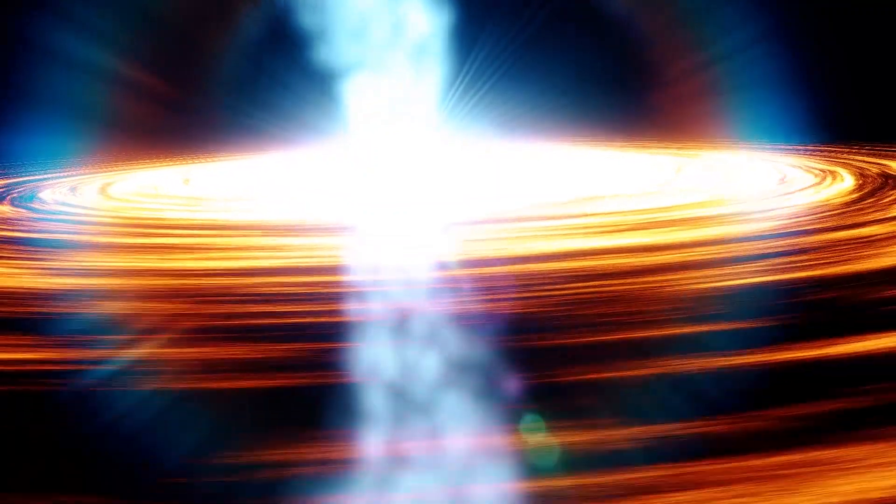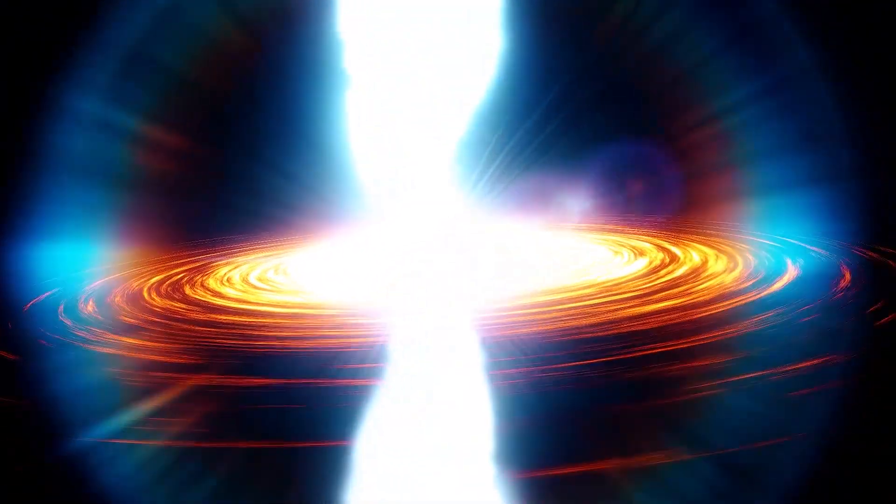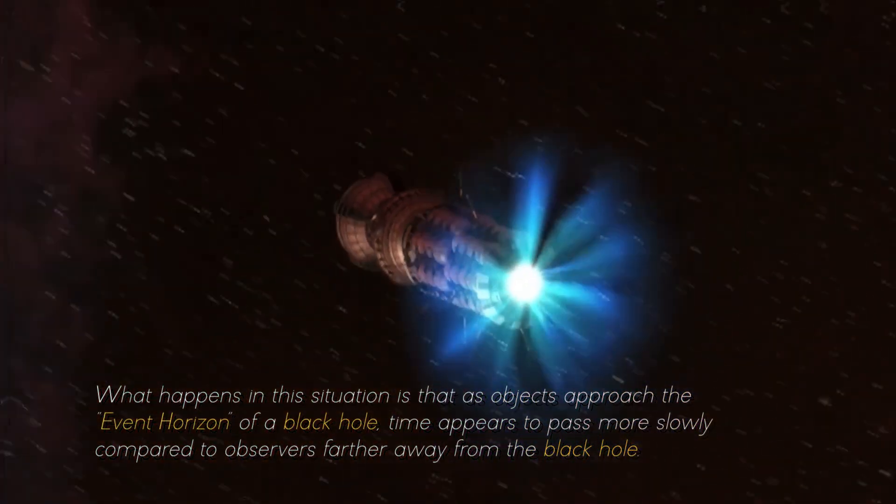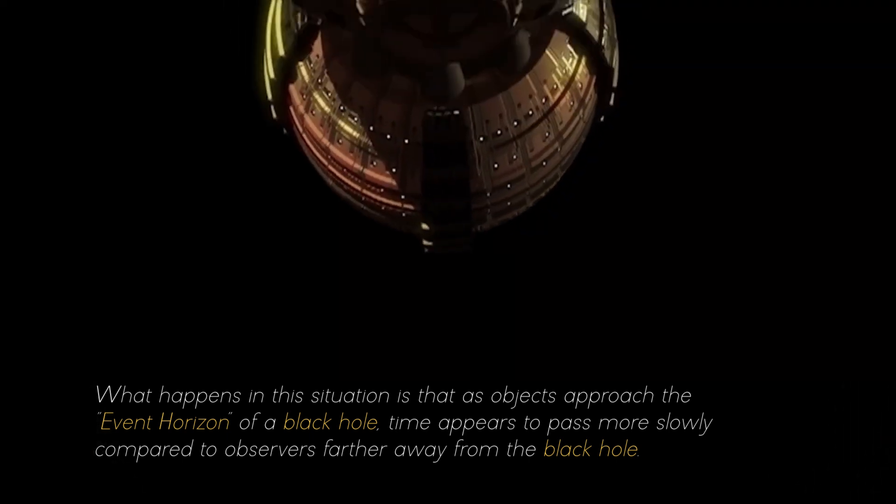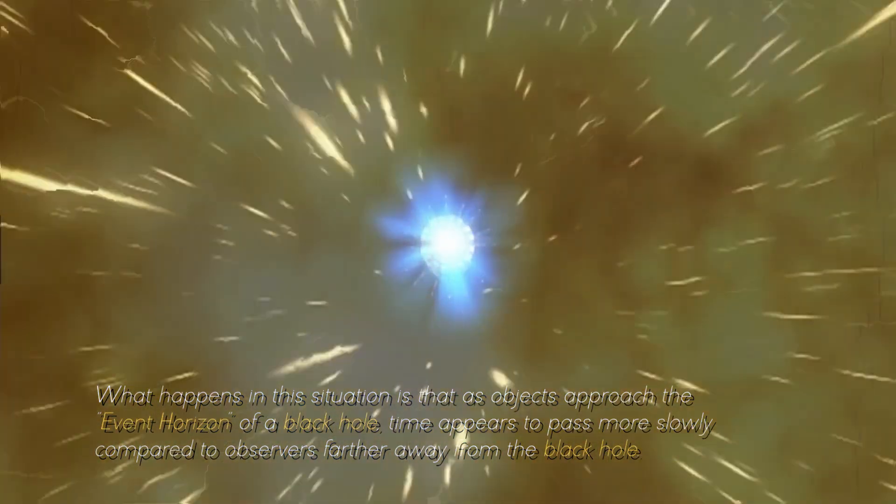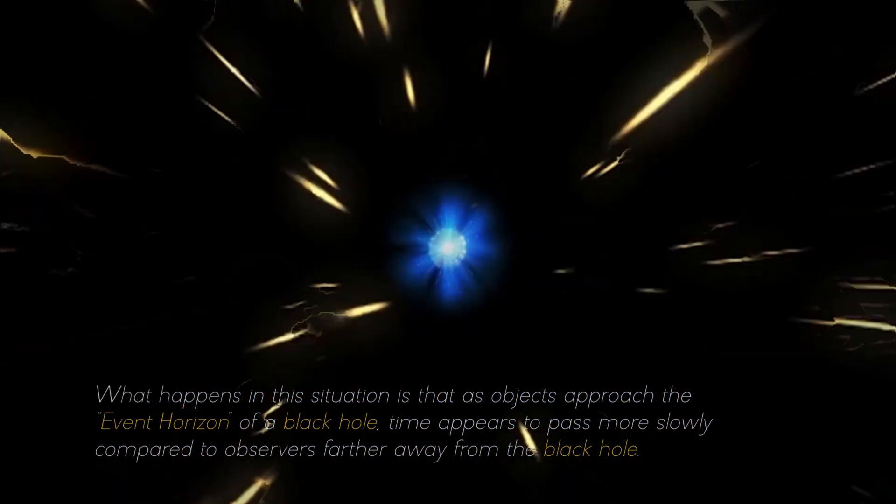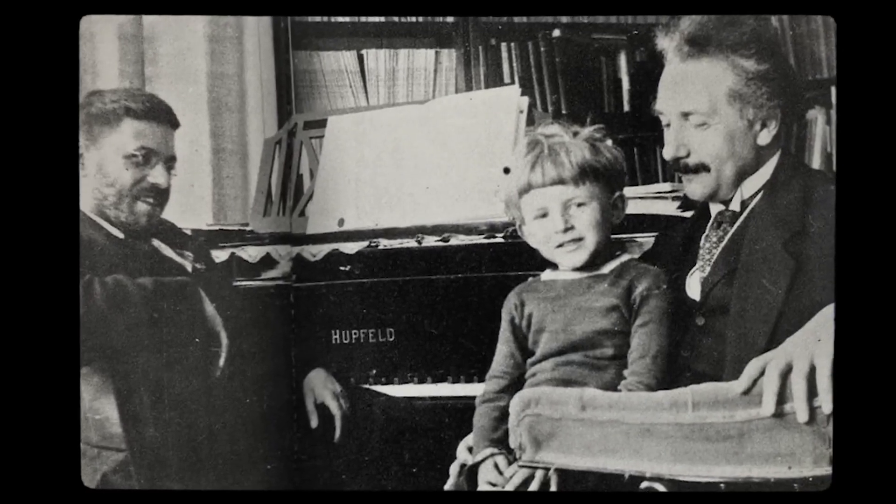But most surprising of all, the extreme gravitational attraction near a black hole gives rise to a phenomenon known as time dilation. What happens in this situation is that as objects approach the event horizon of a black hole, time appears to pass more slowly compared to observers farther away from the black hole. This phenomenon, predicted by Einstein's theory of relativity, is due to the warping of space-time caused by the intense mass of the black hole.